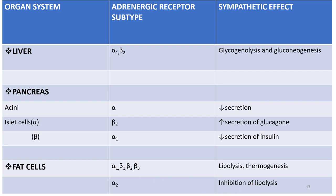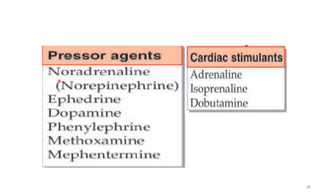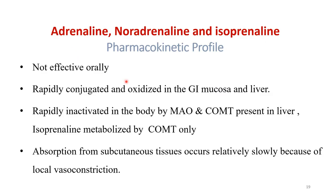Classification of adrenergic drugs by indication — pressor agents: noradrenaline, ephedrine, dopamine, phenylephrine, methamphetamine, and mephentermine cause increased blood pressure. Cardiac stimulants: adrenaline, isoprenaline, and dobutamine. Pressor agents act on alpha-1, alpha-2, beta-1, and beta-2 receptors. Alpha-1 and alpha-2 stimulation causes vasoconstriction increasing peripheral resistance; beta-2 causes vasodilation and a fall in diastolic blood pressure.